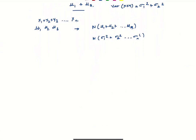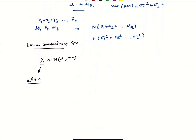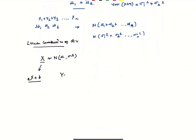We also have linear combinations of random variables. If we have a random variable x defined as Normal(mu, sigma squared), and we multiply it by a constant a and add b, we get a new variable y = ax + b. The expected value of y is just a·mu plus b.